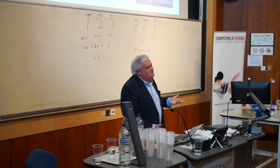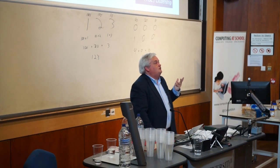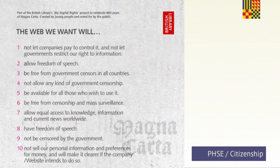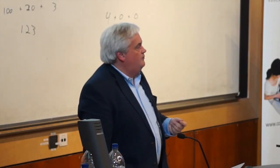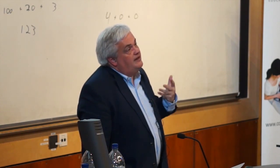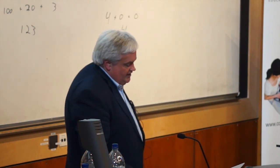PSHE and citizenship — no code for this one. But it's worth getting your pupils to think through some of the issues which result from how code is used. For instance, if the British Library asked them what they wanted for the future of the web, look at what young people said: freedom of speech, freedom from government censorship, freedom from mass surveillance. What do their insights into programming and computer science say about that?